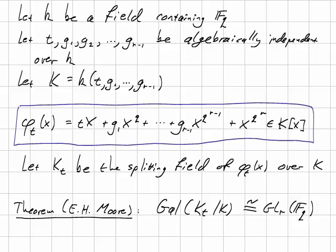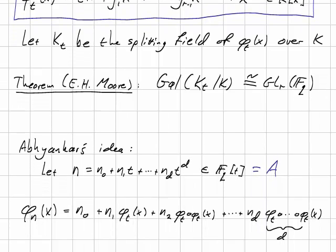Abhyankar saw this, and he wondered if it's possible to come up with another polynomial and get a larger Galois group, something like GL_r of a finite extension of F_q. And he had a very clever idea how to achieve this. So here's his idea.